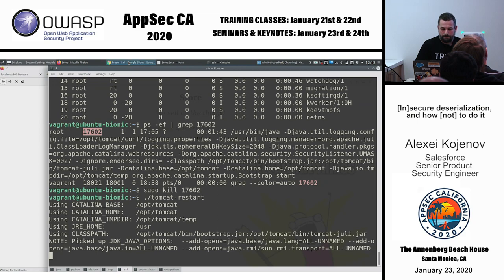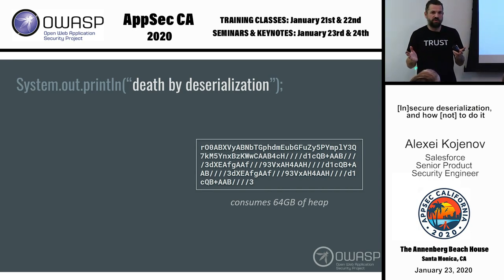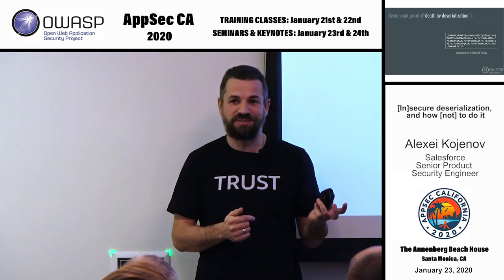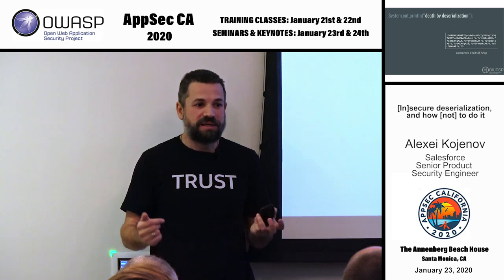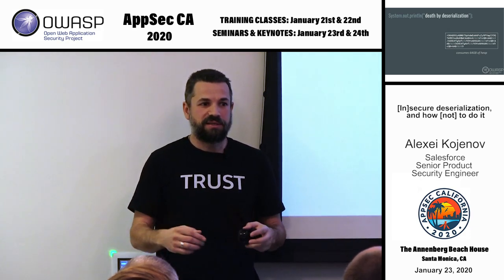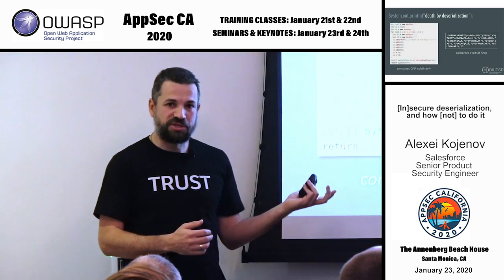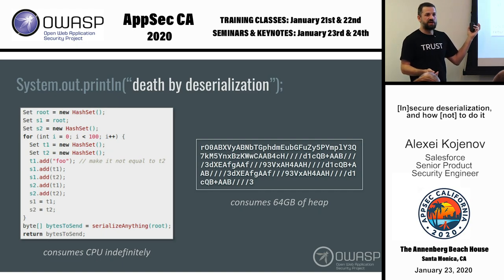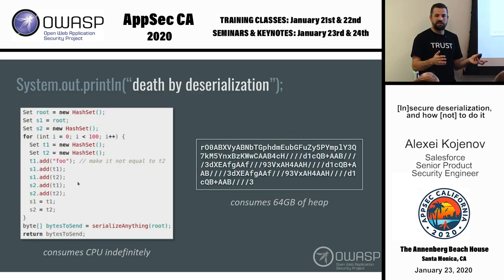So what just happened? The 64-gigabyte object is a very small object on disk — maybe 100 bytes — but when deserialized, it tries to allocate 64 gigabytes of RAM. The CPU bomb is some kind of tree structure, 100 levels deep — only five kilobytes on disk — but it consumes CPU indefinitely. The point is that during deserialization, you can make certain things happen that are very undesirable.